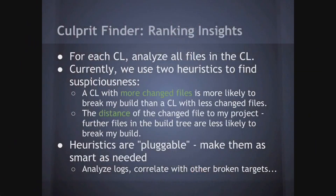The interesting part is how we do the ranking. For every single change list, we look at all the files in it. We use two heuristics right now. The first one is rather trivial: if a change list has more files than another, it's obviously more suspicious because it touched more stuff in the build tree.